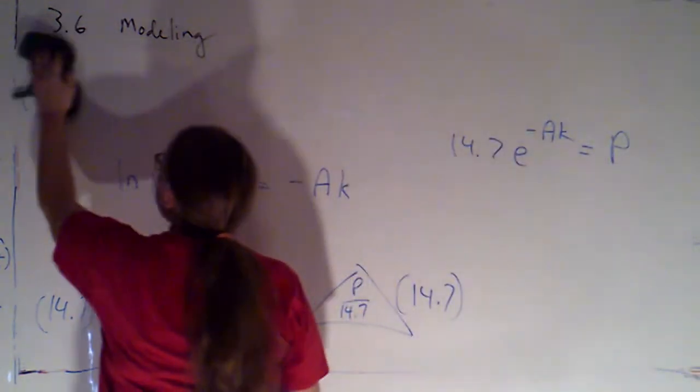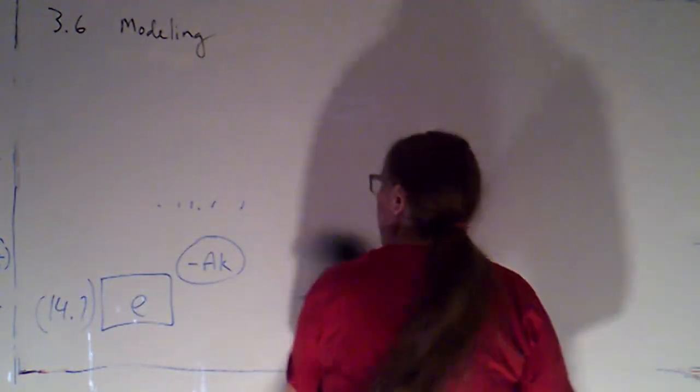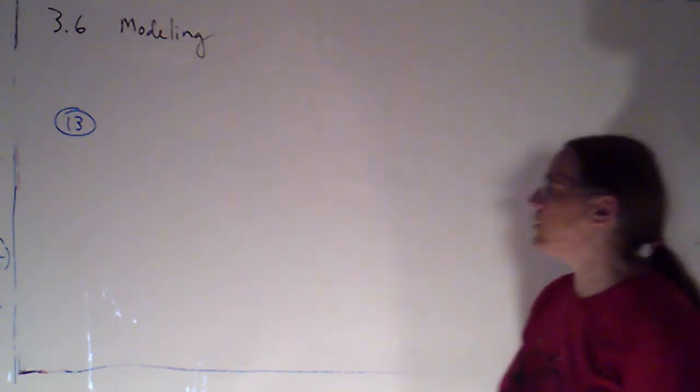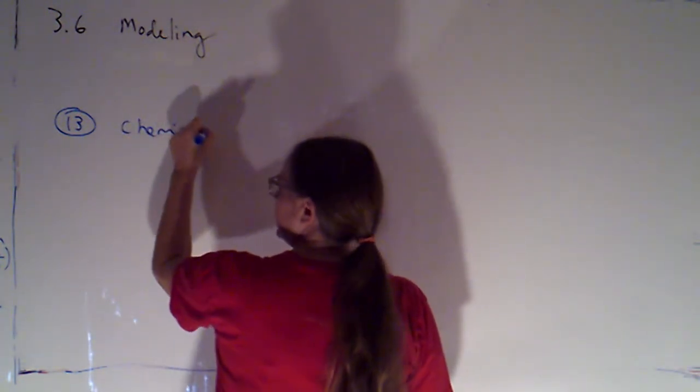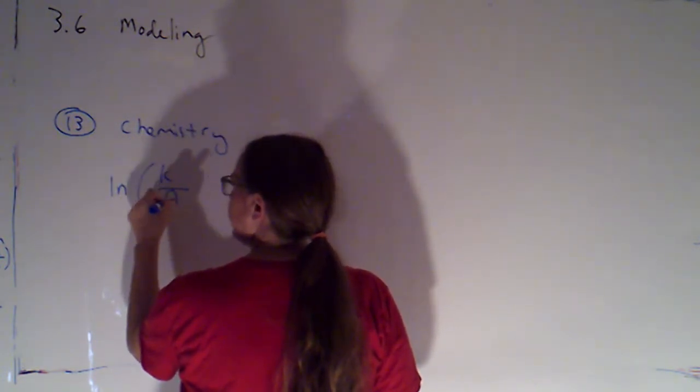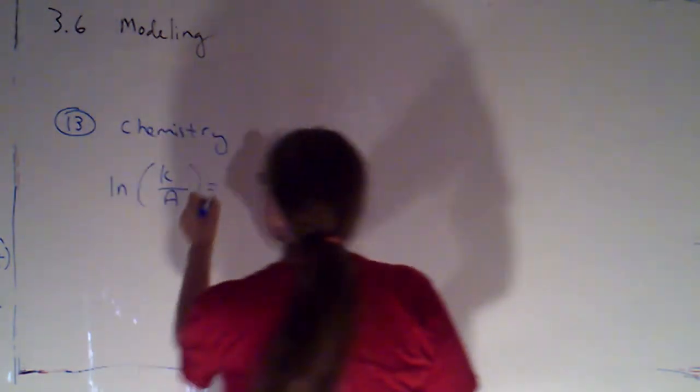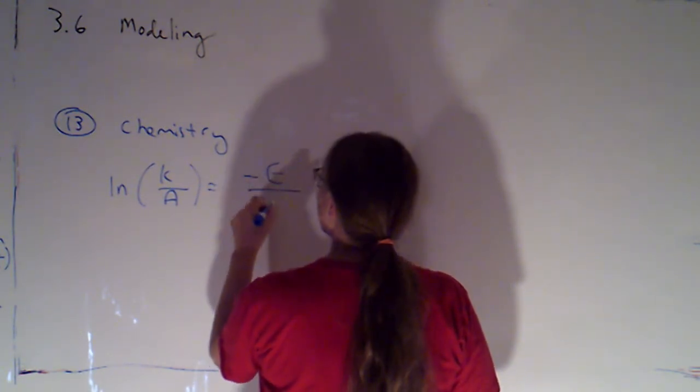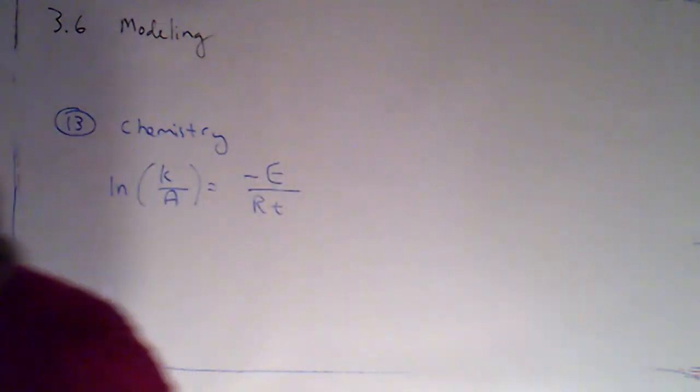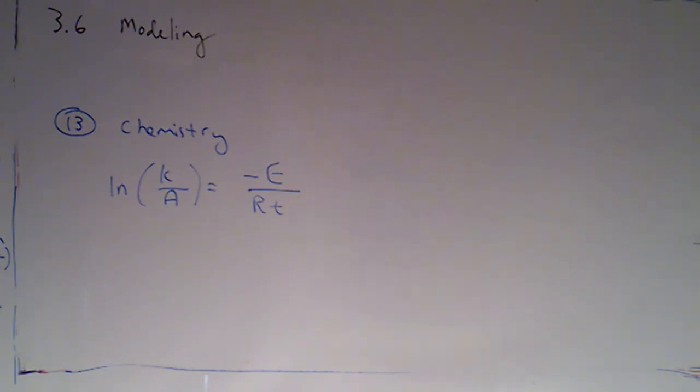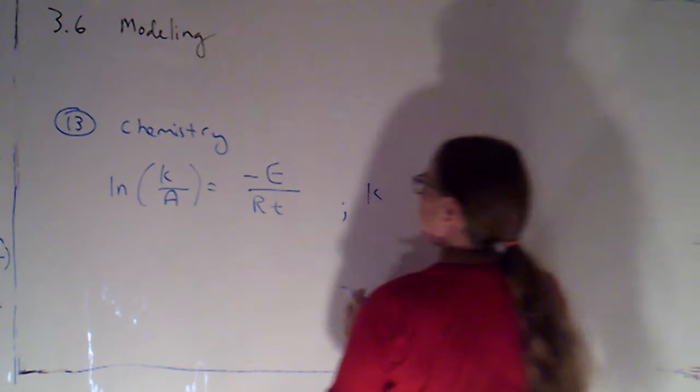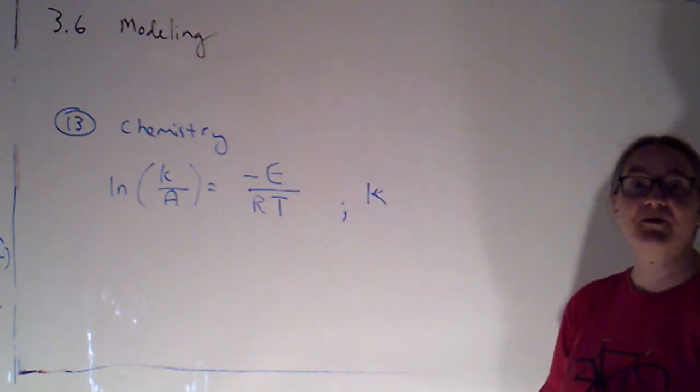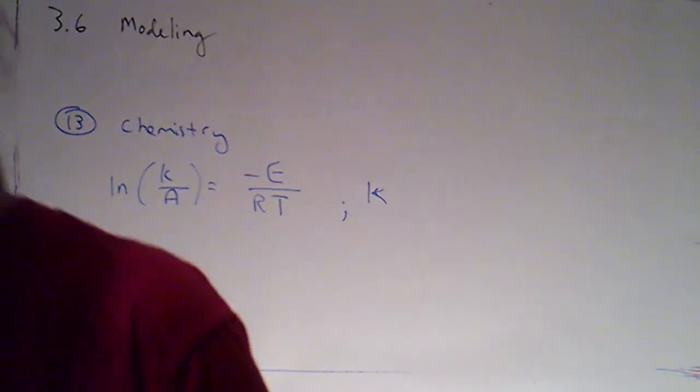I'm going to have you folks try one, and then we'll go over it at the end of the next video. So the two I did were even-numbered problems. This is an odd-numbered problem, so it is an assigned problem in the homework. You're getting a jump start on the homework. This is one that shows up in chemistry. And it's the natural log of k over a is equal to negative e over r times t. We are solving for k. And they actually use a capital T of the textbook. So see if you can solve that for k, and we'll start with that at the beginning of the next video.